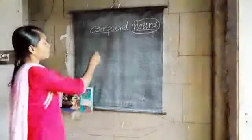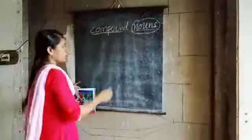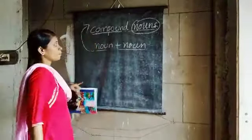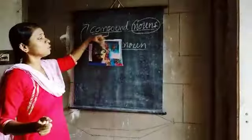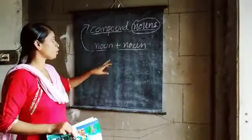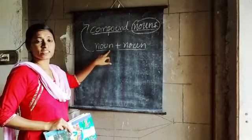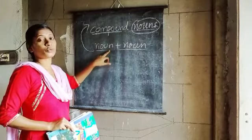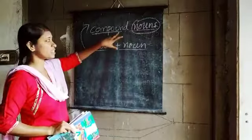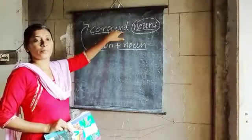Now, what are compound nouns? Two nouns together — noun plus noun. When two nouns mix together it is called a compound noun. When we write two nouns together as one word, that is called a compound noun. Compound noun means two nouns writing together — it is the mixture of two nouns written as one word.